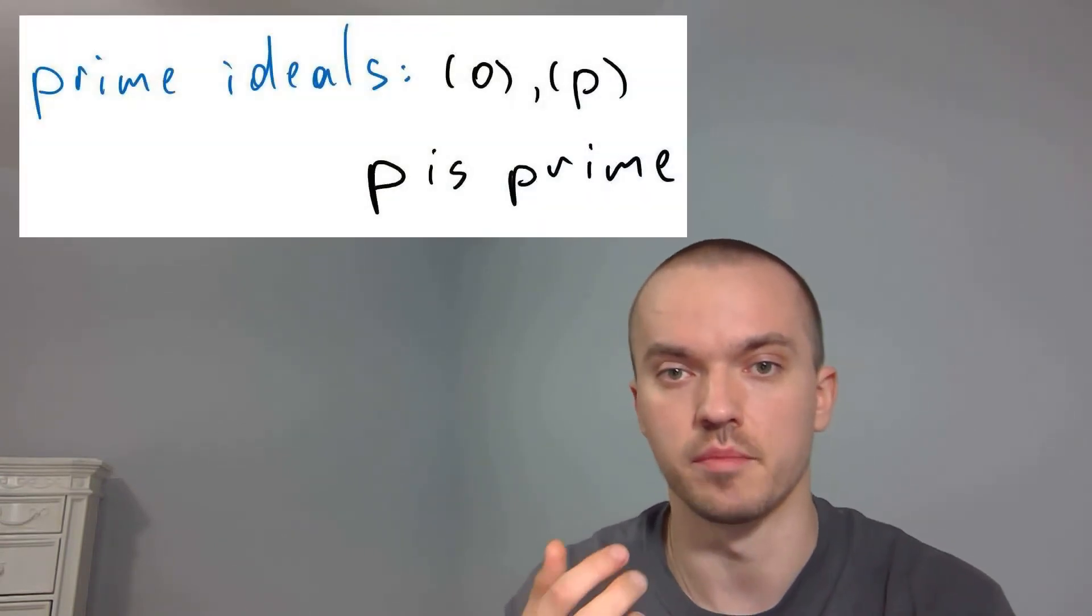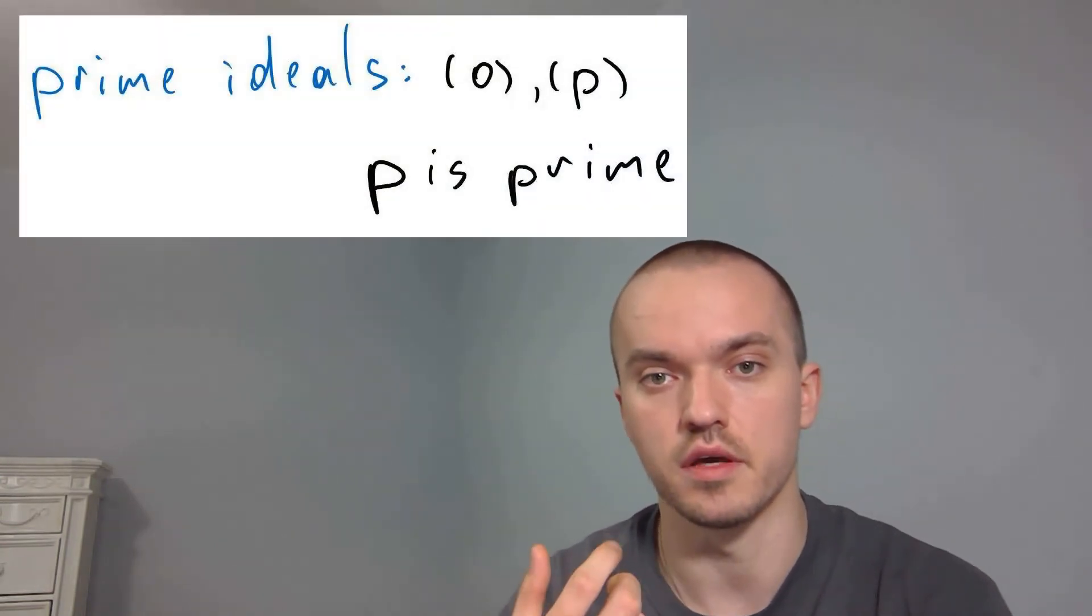Prime ideals in integers are given by prime numbers and a zero ideal. The reason why zero ideal is a prime ideal is because integers are an integral domain.